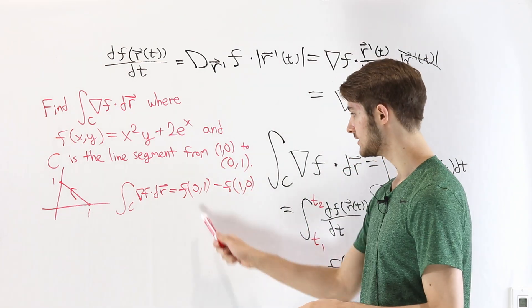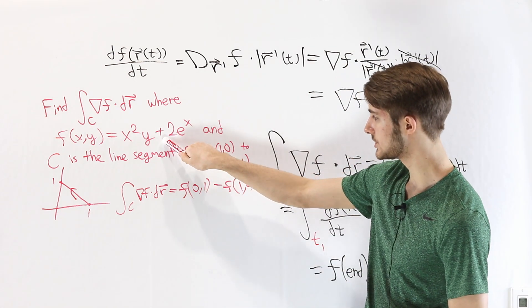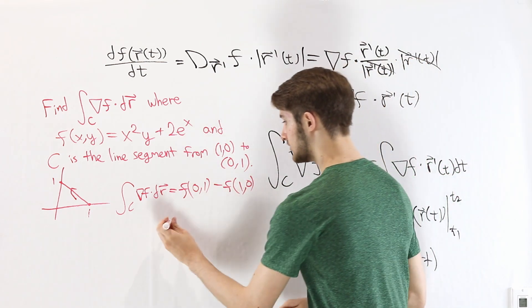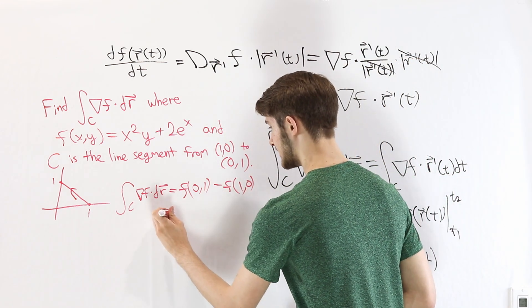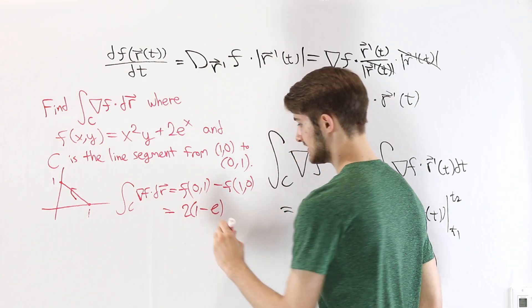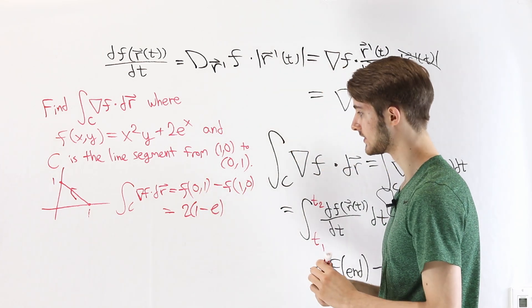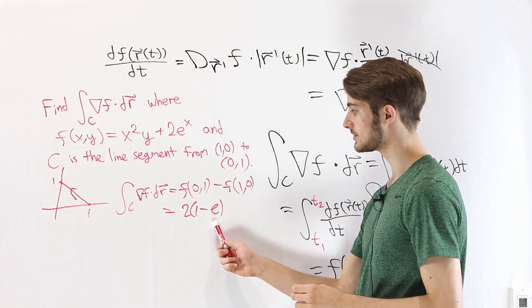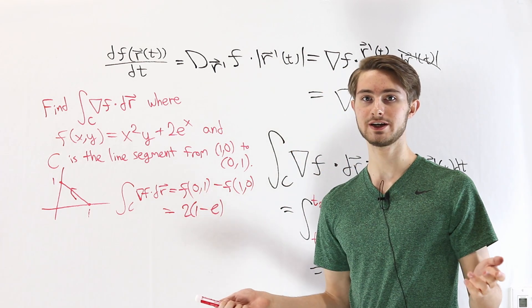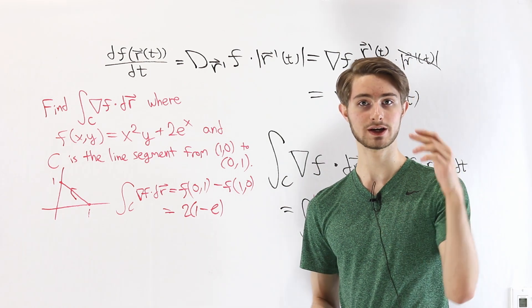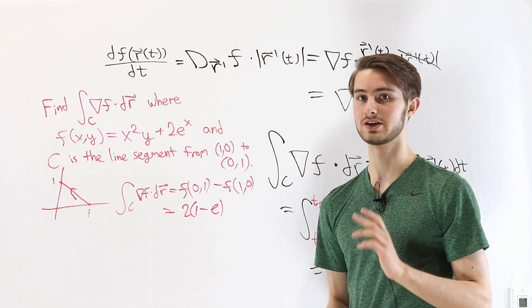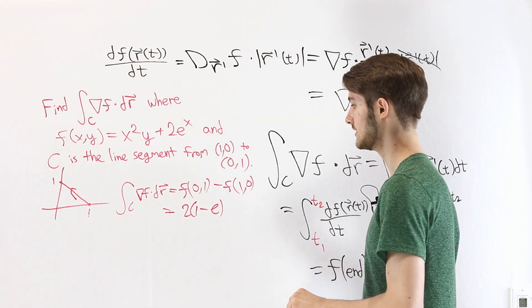Plugging the values (0, 1) and (1, 0) into our function and simplifying gives us an answer of 2(1 − e). We don't even have to find r(t), because we can just plug in the start and end points, thanks to the gradient theorem.